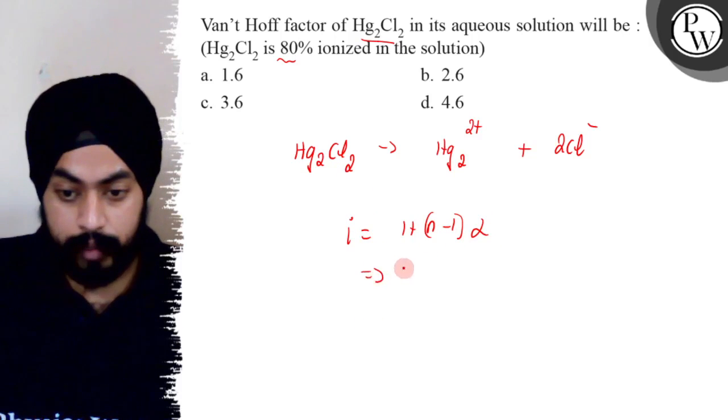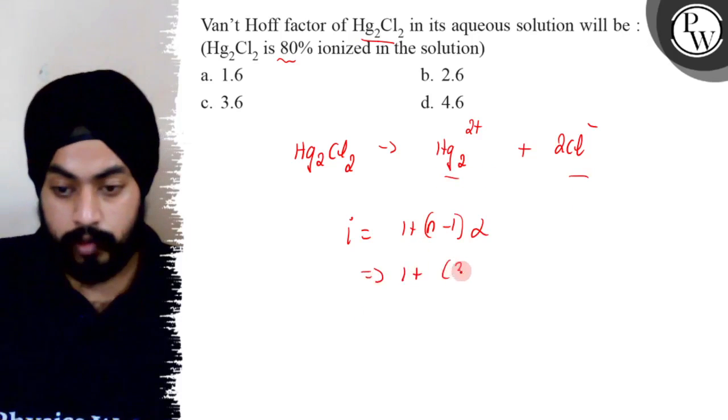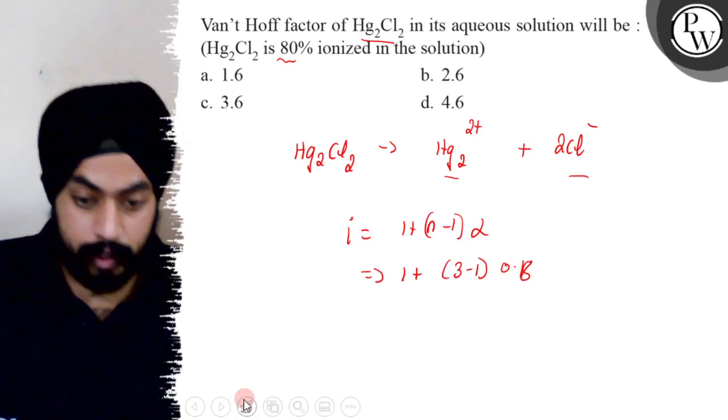So i will be 1 plus n. What will n be? It will be 3 because it ionizes into 3 ions. So this will be 3 minus 1 into alpha, which is 0.8.